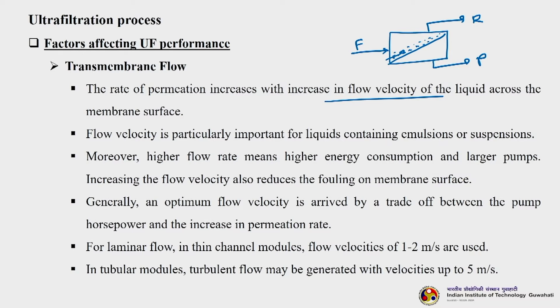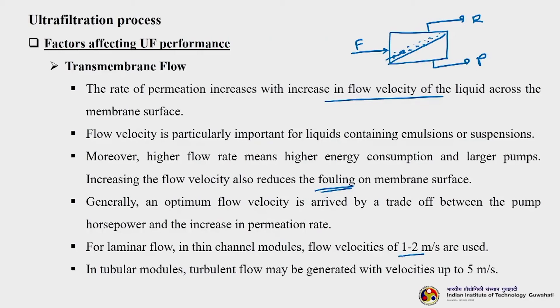Higher flow rate means higher energy consumption and larger pumps — it is not always a win-win situation. Increasing the flow velocity also reduces fouling on the membrane surface. An optimum flow velocity is arrived at by a trade-off between the pump horsepower and the increase in permeation rate. You simply cannot keep increasing cross-flow velocity as you wish. For laminar flow in thin channel modules, flow velocities of almost 1 to 2 meters per second are used, and in tubular modules where turbulent flow comes into picture, we can go up to 5 meters per second.